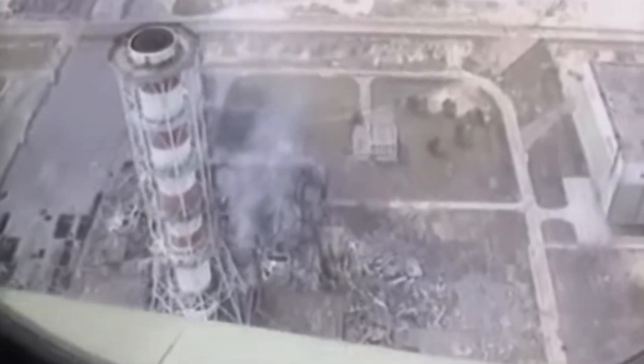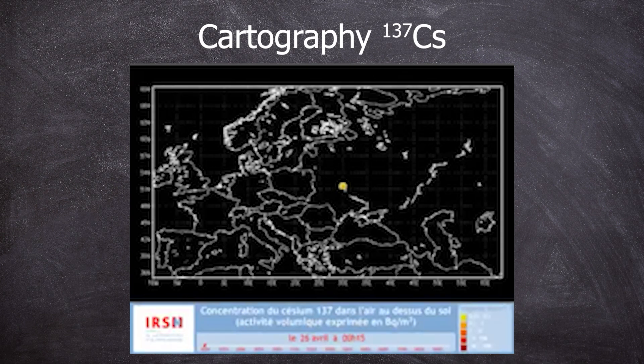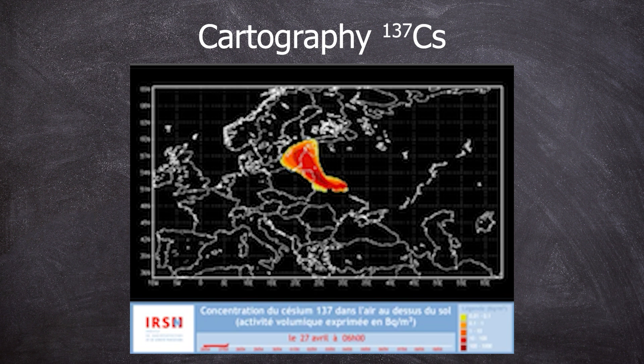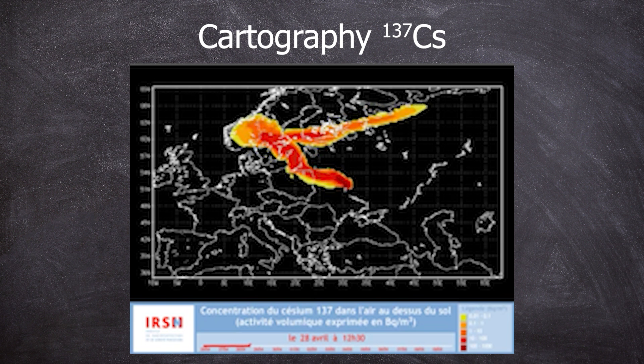April 26, 1986 — reactor block 4 of Chernobyl's nuclear power plant. An explosive release propels the 1,000-ton reactor core lit skywards. Burning graphite rods ignite and the fire explosively releases parts of the spent nuclear reactor material, including its fission products like iodine-131, strontium-90, and notably Cesium-137.